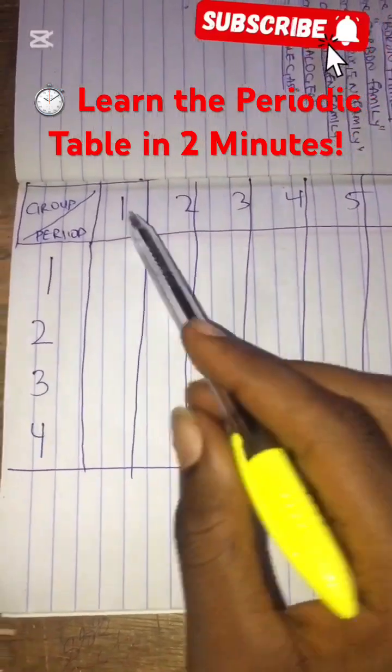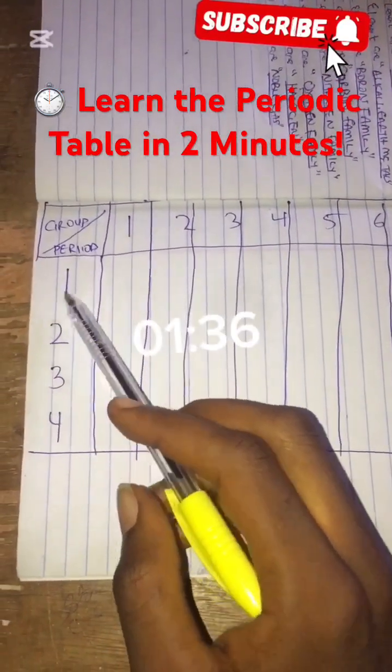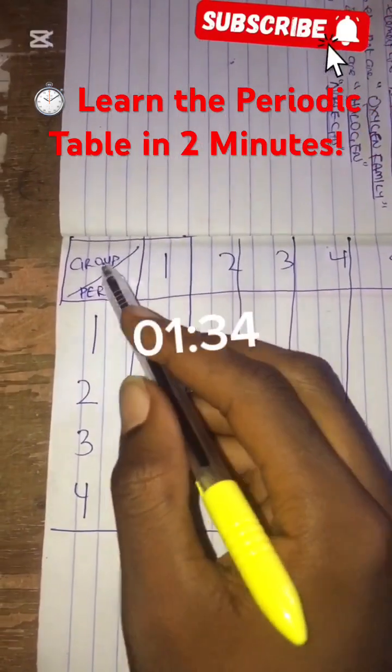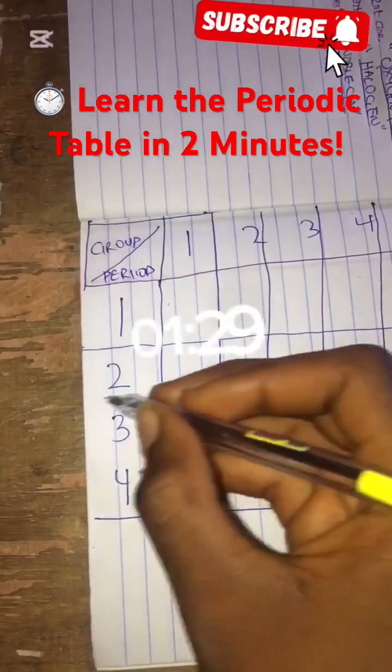This is the periodic table. This is group one, two, three, four, five, six, seven, zero, and this is period one, two, three, four. So now for the group, let's start the drawing.